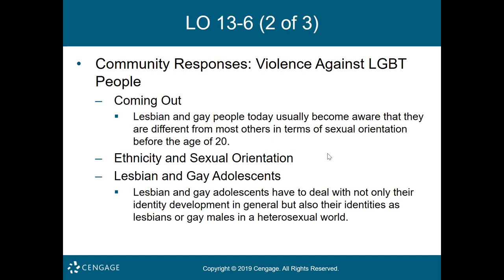Coming out of the closet, or coming out, refers to the process of a person's acknowledging publicly that he or she is gay or lesbian. It is frequently a long and difficult process. Lesbian and gay people today usually become aware they are different in terms of sexual orientation before the age of 20, though for some it may take much longer. For many people — especially adolescents subject to severe peer pressure — the coming out period may be very difficult. One way to describe coming out is to identify four stages: coming out to oneself, getting to know others within the gay and lesbian community, sharing with family and friends, and then openly acknowledging one's sexual orientation publicly.